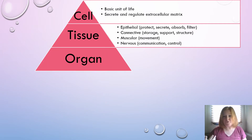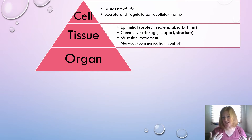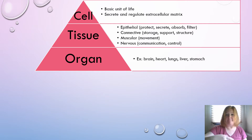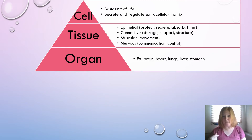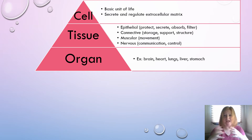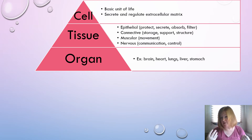Organs are groups of tissues that function together — for example, the brain, the heart, the lungs, the liver, the stomach. The stomach is going to have epithelial tissue, connective tissue, muscular tissue, and nervous tissue, and together they work together in the organ to function.